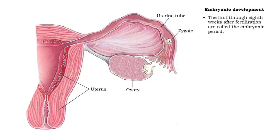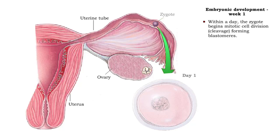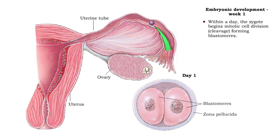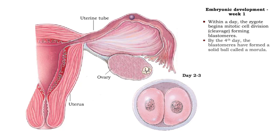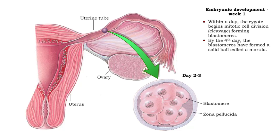The first through eighth weeks after fertilization are called the embryonic period. During the first day following fertilization, the zygote begins mitotic cell divisions called cleavage as it moves through the uterine tube. The cells formed are called blastomeres. By the fourth day after fertilization, the blastomeres have formed a solid ball, now called a morula.